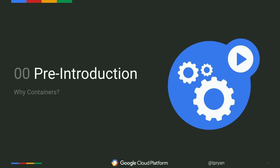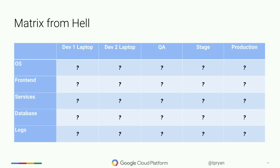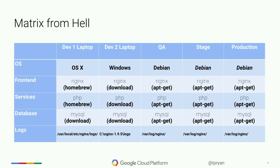A little pre-introduction: why containers? Everybody's familiar with this matrix from hell. You've got multiple stacks of software, multiple places where it can run. They all come from different places with different versions, different install locations. And so you often run into the problem of 'it works on my machine' — and people very much don't like hearing 'well, your laptop's going into production.'